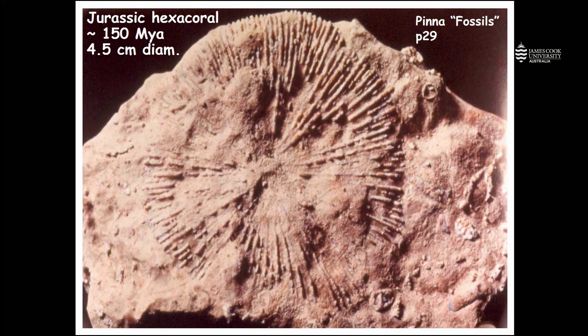This is actually a fossil coral preserved from around 150 million years ago, from a period in the distant past called the Jurassic. This fossil is about four and a half centimeters in diameter, and you can see some of the key features of the skeleton that look very similar to the features of coral skeletons today. In this fossil we can see the septa, which are divisions in the skeleton, fanning out from a central point. And in fact, this fossil coral looks very similar to some corals that are living today.